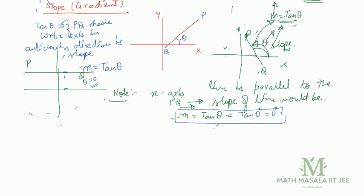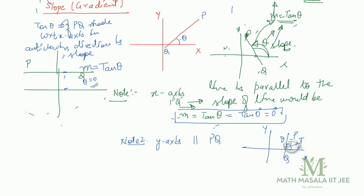Note 2: If the y-axis is parallel to PQ, then your PQ is along the y-axis. The angle theta here is 90 degrees, which is pi by 2. So tan of theta equals tan of pi by 2, which is 1 by 0, which is infinity. So the slope here is infinite.